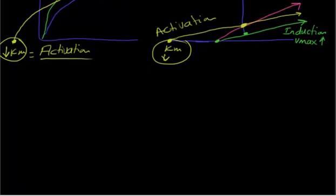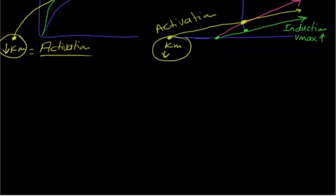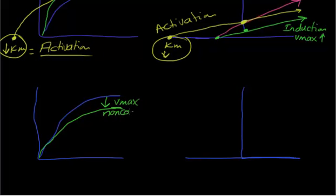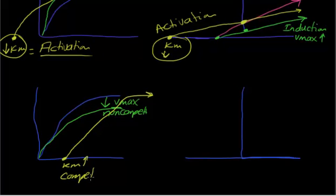How about competitive and non-competitive inhibitors? We already discussed this in the first video. When the curve goes from up to down, that means Vmax decreases — a decrease in Vmax means non-competitive inhibitor. How about the Km? When Km increases, the curve shifts accordingly, while Vmax does not change — Km increase means competitive inhibitor.